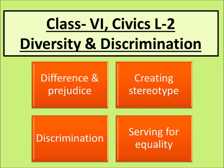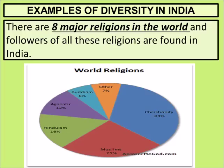Now let us first know what diversity is. Diversity means different, various, different types. There are eight major religions in the world, and followers of all these religions are found in India. The maximum number of people around the world are Christian — 34 percent — followed by 25 percent Muslims, 16 percent Hindu, 12 percent agnostic, 6 percent Buddhist, and 7 percent other religions.